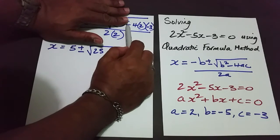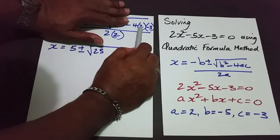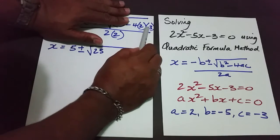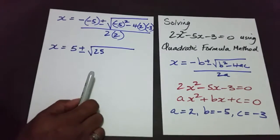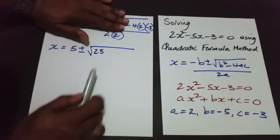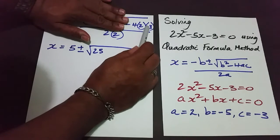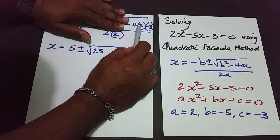Be very careful here. Negative 4 times positive 2 is negative 8, and then negative 8 times negative 3 is positive 24. So I'm multiplying a negative number by a positive by a negative.